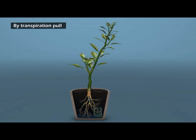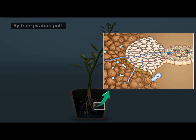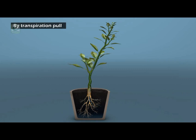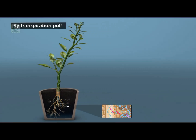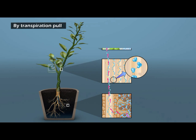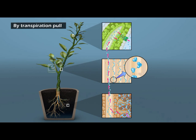Second, by transpiration pull. The sap that reaches the tracheary elements of xylem in the roots is lifted upwards. It goes up to the leaves as an unbroken column of water, due to the continuity of xylem elements throughout the plant.